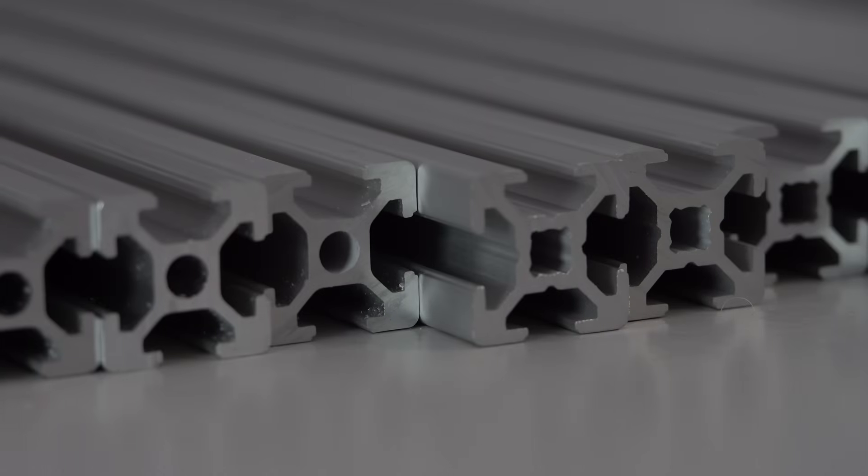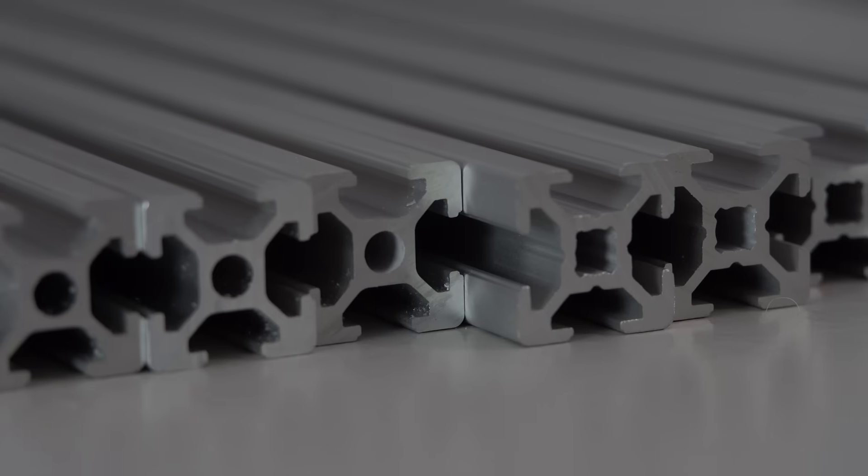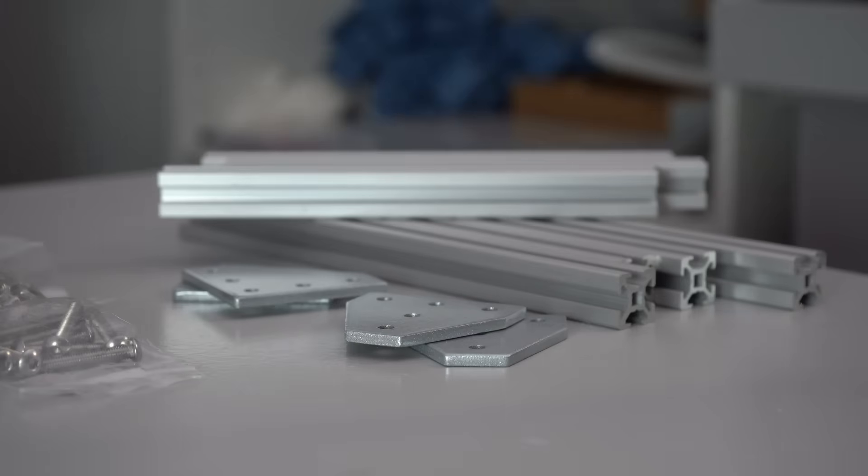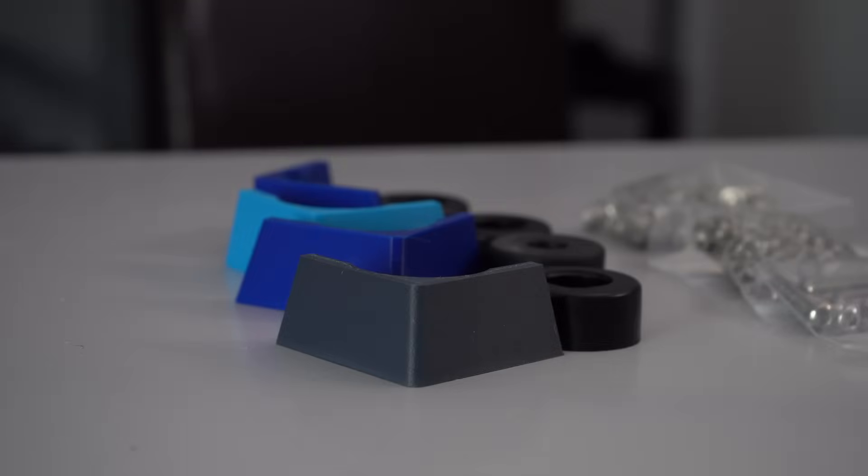Let's get started with the frame. The frame of a stock Cappy uses four 200mm and four 250mm long 20-20 extrusions. Additionally, you need two L-type corner plates and two T-type corner plates, along with the printed feet.